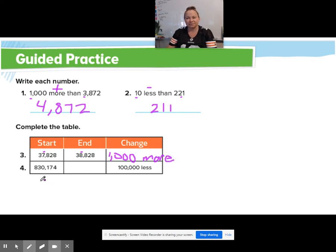All right. Let's do number four together. 830,174. What is 100 less? So what are we going to put as our end? If we take away, less means take away, or subtract. What is 100,000 less than this? So here's the 100,000. Here's the 100,000 place. I'm going to take 1 away from that 8. And it leaves me with 730,174.